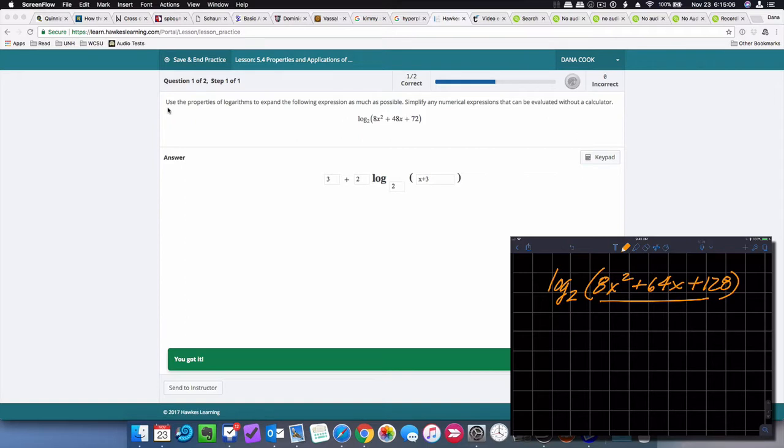The first and main portion of the directions indicates that you should expand the following expression. So we have this expression that's a logarithm base 2 of some trinomial. This expression has a single term. Yes, the argument has three terms, but the expression itself is a single term, a logarithm.